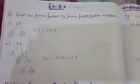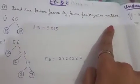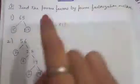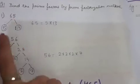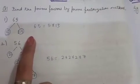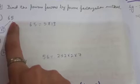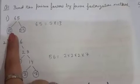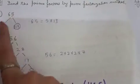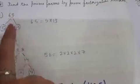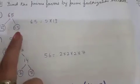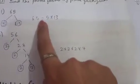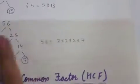Now move to exercise 3.2. Find the prime factors by prime factorization method. First part is 65. Starting with 2, the last digit is 5 so not divisible. Next is 3, but 6 plus 5 equals 11 which is not divisible by 3. Next prime is 5, and the last digit is 5 so it's divisible by 5. Dividing 65 by 5 gives 13. So 5 and 13 are the prime factors, and both are prime, so we stop here.